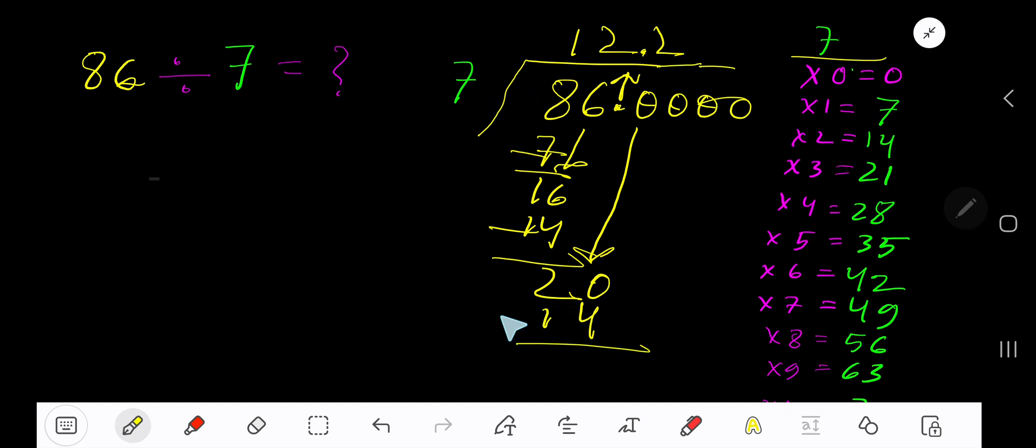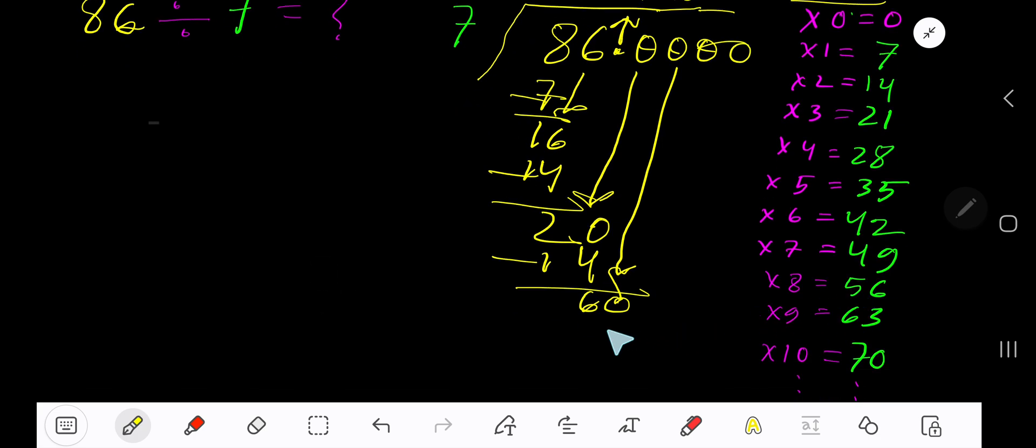Bring down another 0. Now you have 60. 7 goes into 60 how many times? 9 times 63, which is too large, so 8 times. 8 times 7 is 56. If you subtract, you are getting 4.